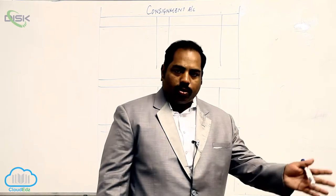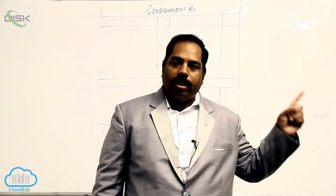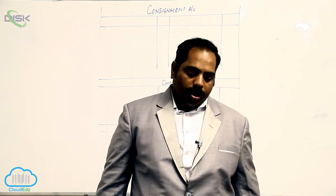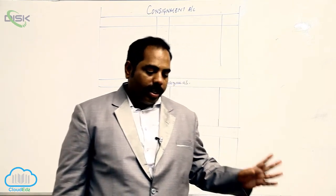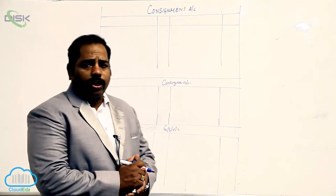So let me teach you consignor books. In the books of the consignor, who is the consignor? Anand is consignor and Arvind is consignee. Anand is sending goods worth Rs. 20,000 to his agent.